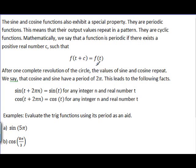So what that means mathematically, we said that a function is periodic if there exists a positive real number c such that f of t plus c is equal to f of t. Well, you know that after one complete revolution of the circle, we're back to the same values of cosine and sine.